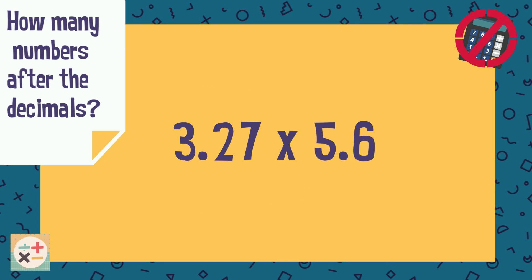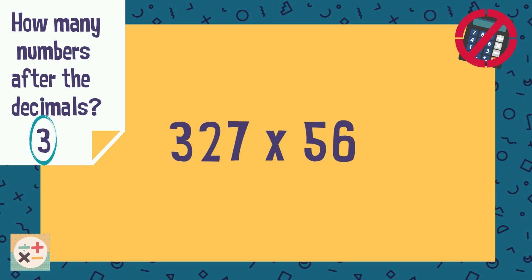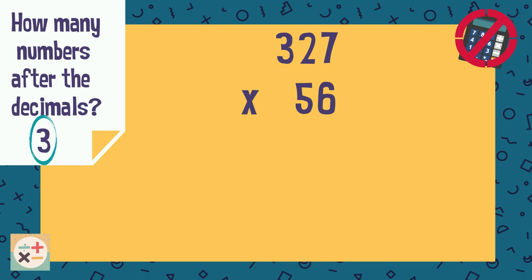Firstly, make a note of how many digits are after the decimal point in both factors. Next, remove the decimal points. Then calculate the multiplication using your chosen method. In this case we are using the column method.